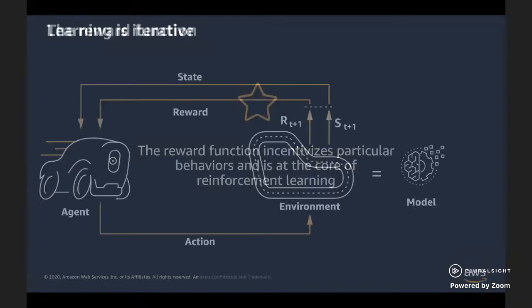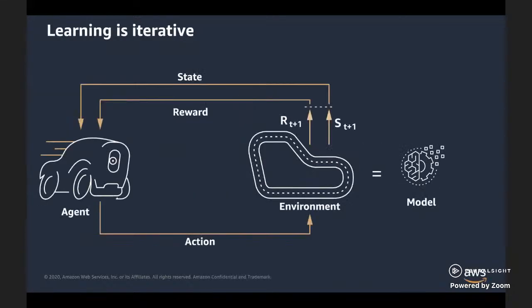In DeepRacer, our agent is the car, and it interacts within the simulated racetrack environment during training. In the simulator, AWS DeepRacer drives around the track taking pictures at about 15 per second. After each picture — remember, the picture is our state — DeepRacer takes an action and ends up in a new state. This is called a step. DeepRacer Evo has stereo cameras and LIDAR, giving it a more in-depth view of its states and the ability to sense objects.